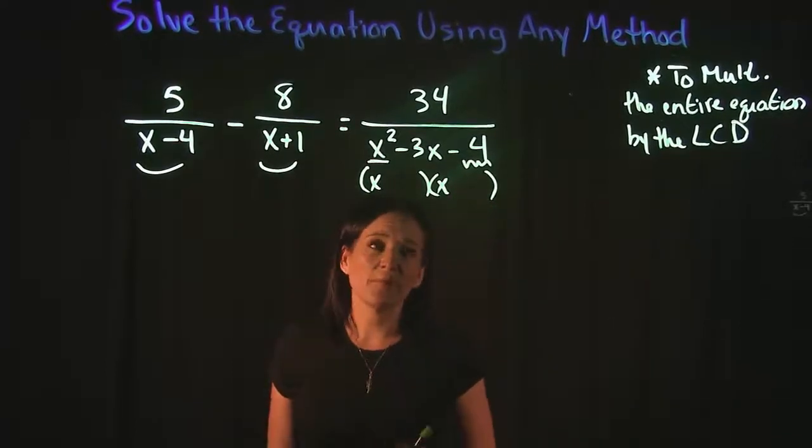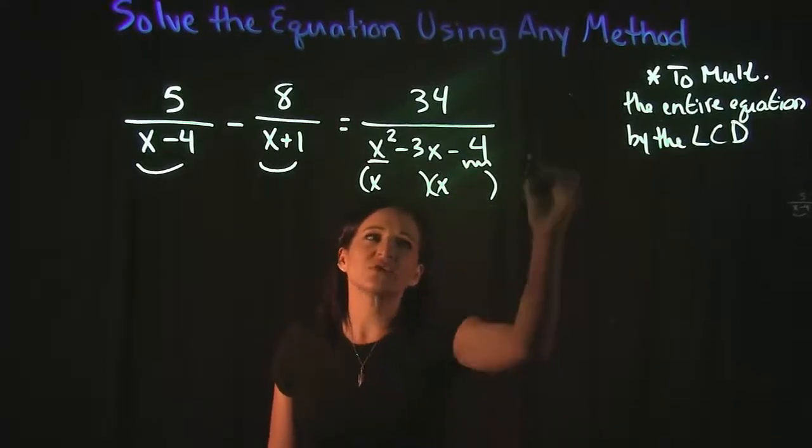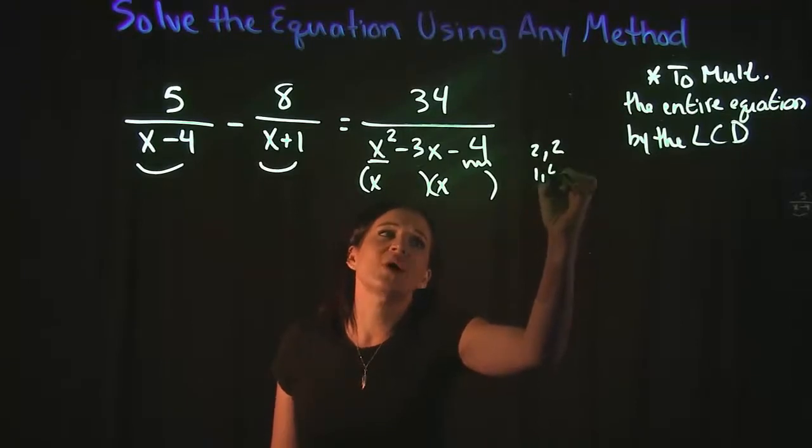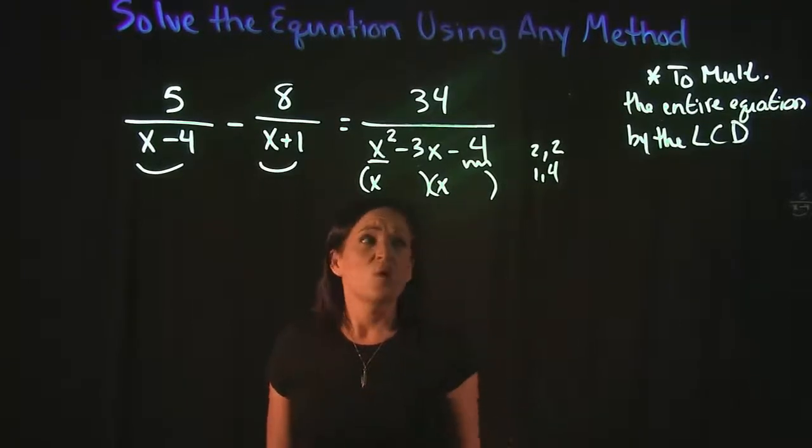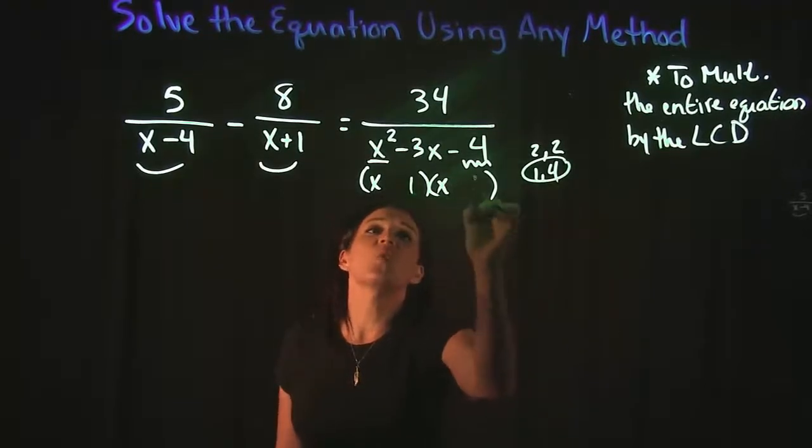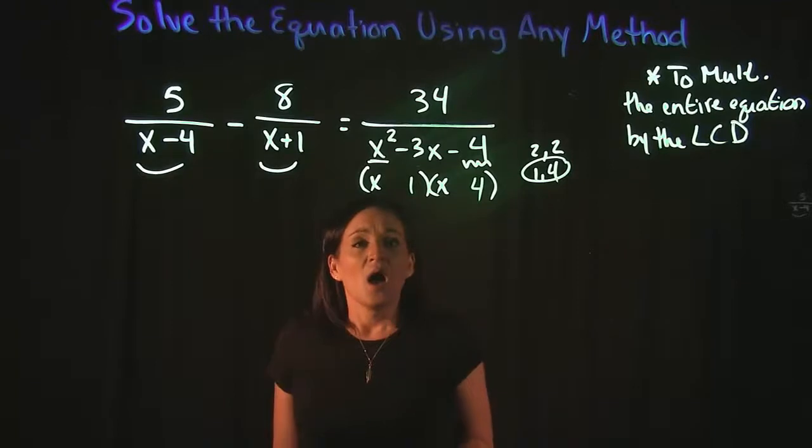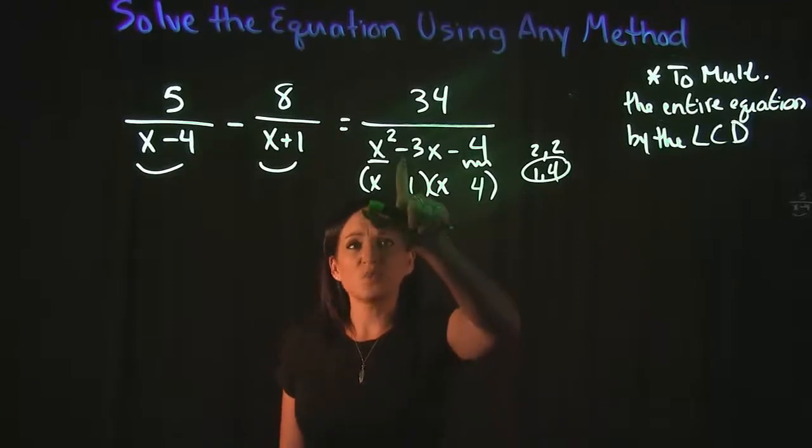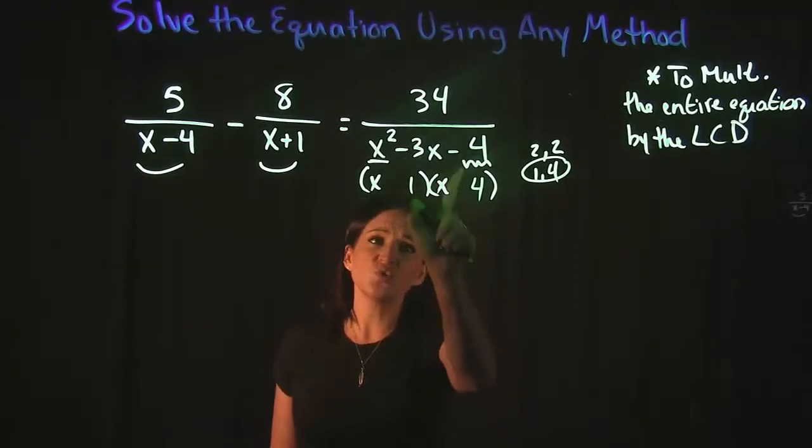Well, the only way to get 4 is either 2 times 2 or 1 times 4. We want the combination of numbers that adds or subtracts to get 3, which means we want the 1 and the 4. Focusing on your signs, whatever sign your middle number has, you want that to go with a bigger number.